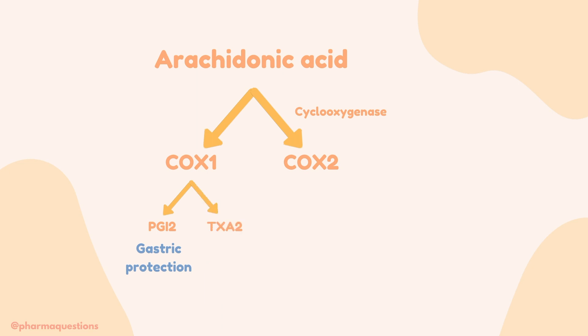The other product formed by COX1 is thromboxane A2, which plays a role in platelet function.